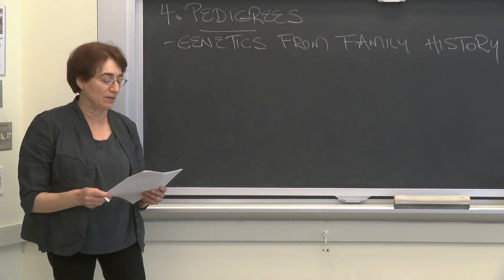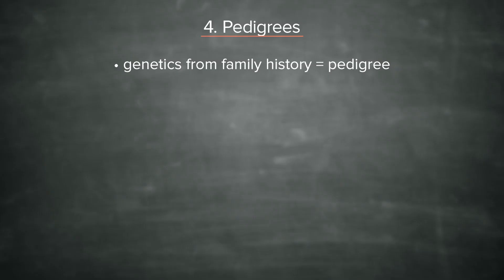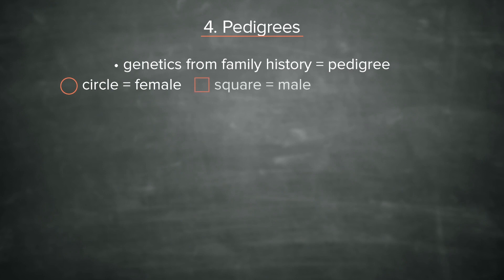When you write a pedigree, there are certain designations you should know. A circle refers to a female, a square to a male, and if either the circle or the square is filled in, it refers to the fact that the trait you're looking at is present. It might be disease, it might be some other trait — you can define it that the trait is present.